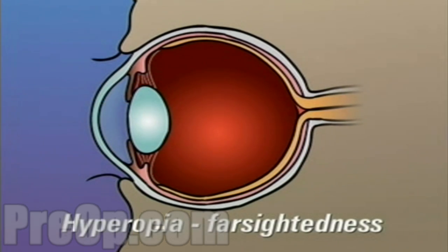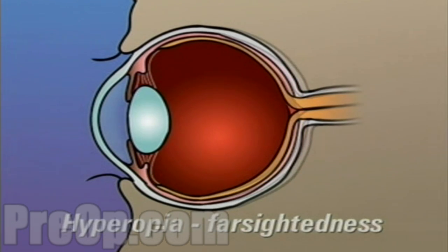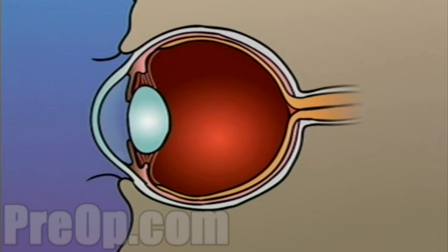Hyperopia or farsightedness occurs when the shape of the eye is too short. In this case, light rays are focused on a point behind the retina.